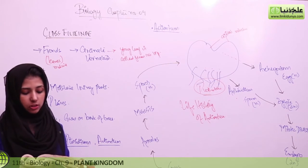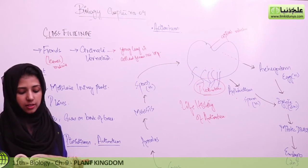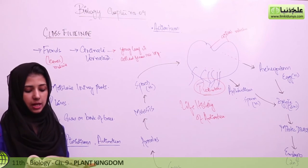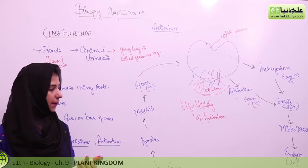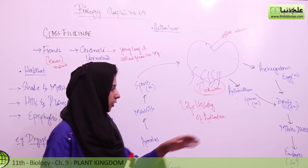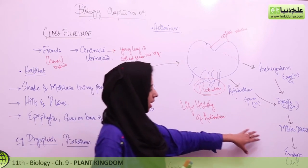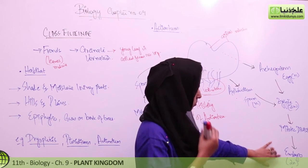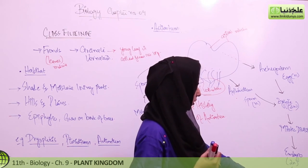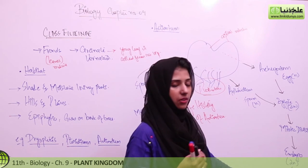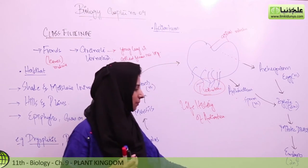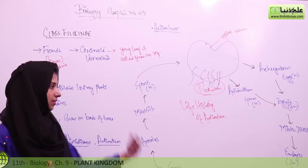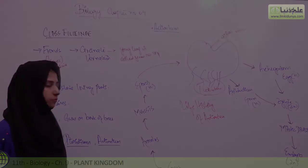The oospore forms the sporophyte. The sporophyte is first attached to the gametophyte, but later it becomes independent. When the sporophyte forms, it starts attached to the gametophyte and then becomes independent, and so the cycle continues.